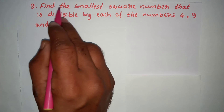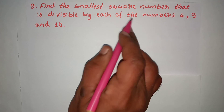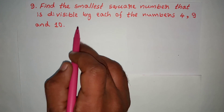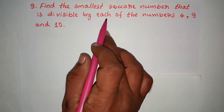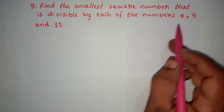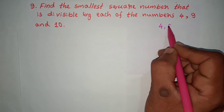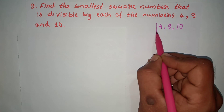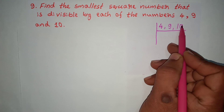Problem 9: Find the smallest square number that is divisible by each of the numbers 4, 9, and 10. We need the smallest square number which is divisible by 4, 9, and 10. First, we find the LCM of these numbers.